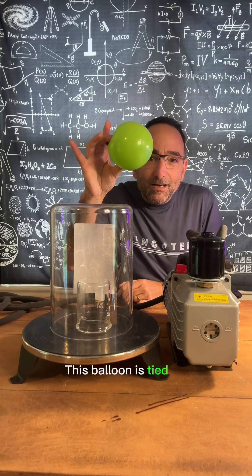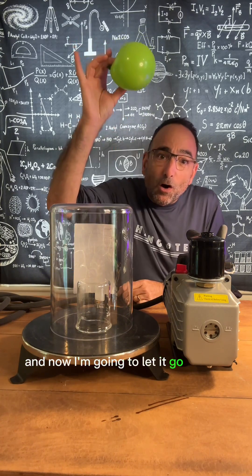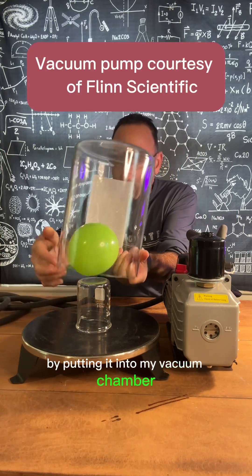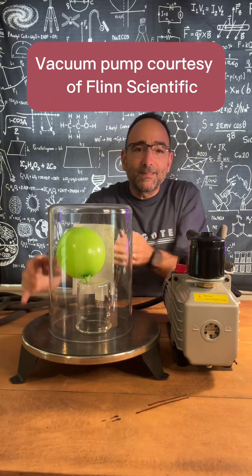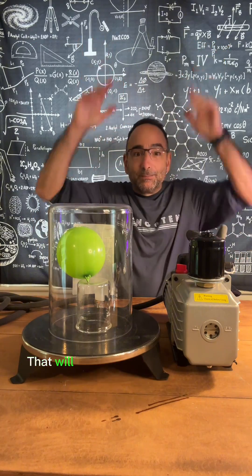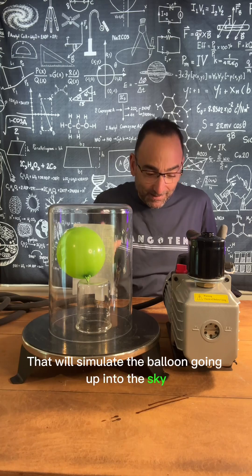So this balloon is tied off, and now I'm going to let it go up into the sky. So I'm going to simulate that by putting it into my vacuum chamber. When I remove the air from the vacuum chamber, that's going to be like the balloon going up into the sky. So what's going to happen?